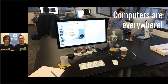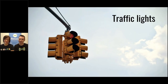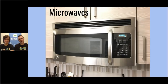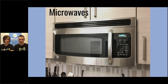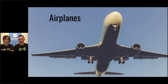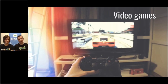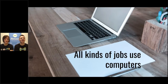Computers really are everywhere we look, and everything that we interact with probably has some connection to a computer. Even things that don't seem like computers — like traffic lights — are controlled by computers. Microwaves even have computers. Anything that has an electronic display probably has a computer. Airplanes are all computer controlled; in fact, many times they fly themselves. And video games are fundamentally computers inside. So computers really are everywhere we look.